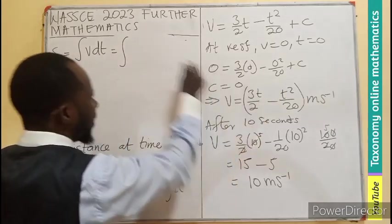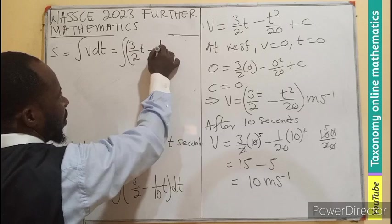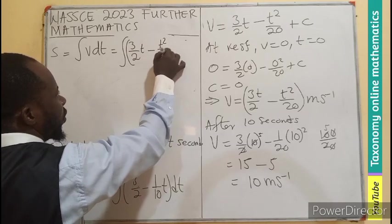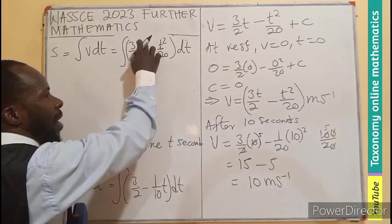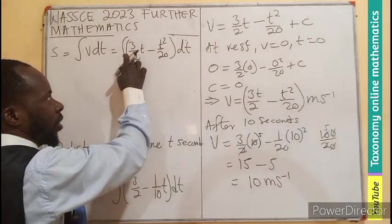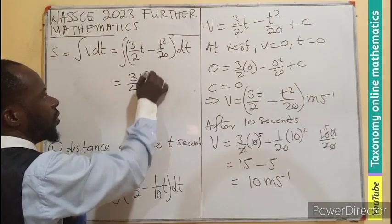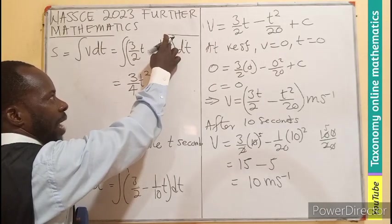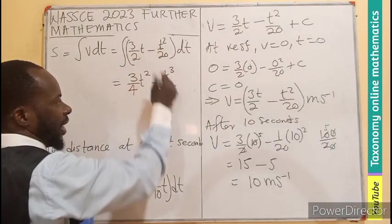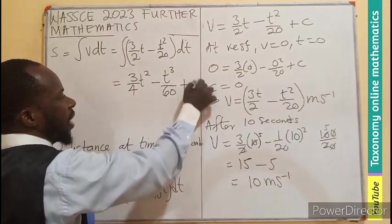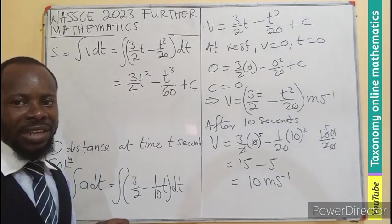Integral of v. What do we have for v? 3 on 2t minus t squared on 20, with respect to t. We are performing integration. So here, there will be a power increase. 1 plus 1 will be 2, divided by this, meaning to multiply this. That will give us 3, 2 times this will be 4, t squared minus, increase this power, I believe that will become 3. So t exponent 3, divided by 20 times the 3, that will give us 60, plus the integral, a constant. But at this point, we need to also know what the c stands for.